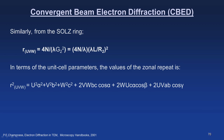Similarly, for the SOLZ ring: 4N/λG₂² = 4N·λL/R₂². In terms of unit cell parameters, the zonal repeat R² = U²a² + V²b² + W²c² + 2VWbc·cosα + 2WUca·cosβ + 2UVab·cosγ. This general information about the zonal repeat is with respect to the Ewald sphere intersecting the reciprocal lattice point in convergent beam electron diffraction.